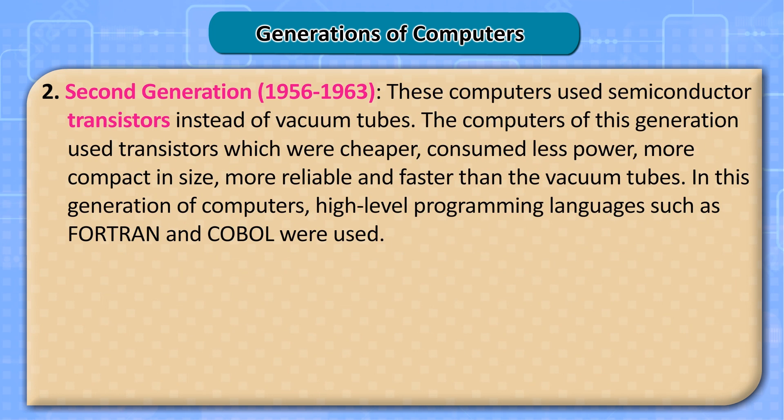Second Generation (1956–1963). These computers used semiconductor transistors instead of vacuum tubes. The transistors were cheaper, consumed less power, more compact in size, more reliable and faster than the vacuum tubes. In this generation of computers, high-level programming languages such as Fortran and COBOL were used.